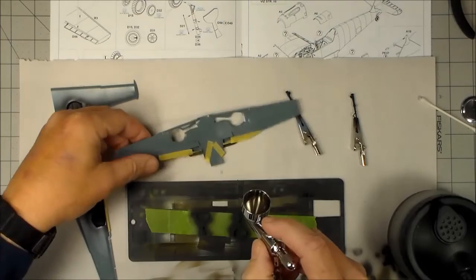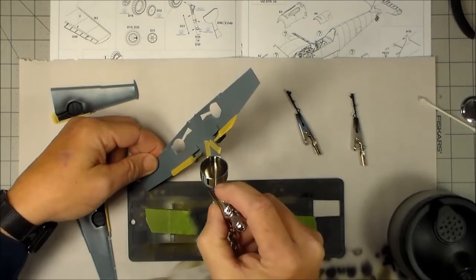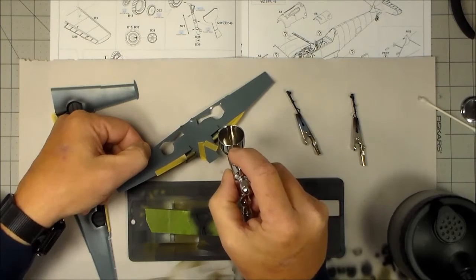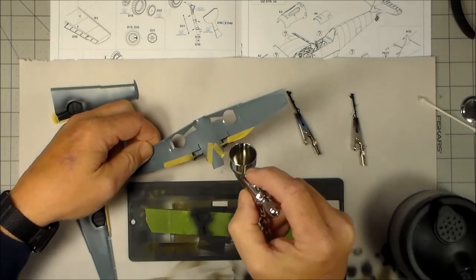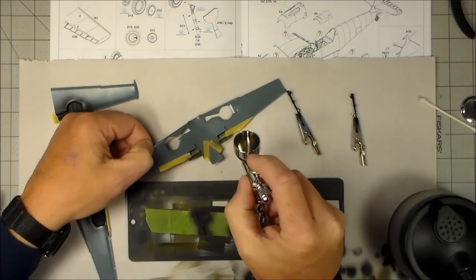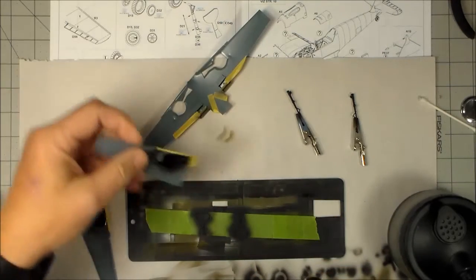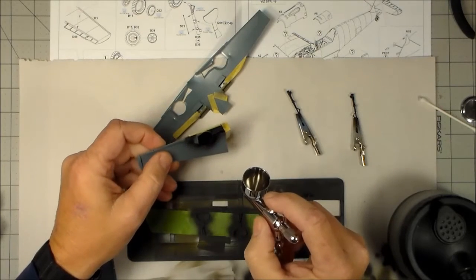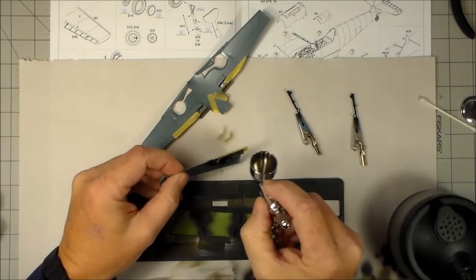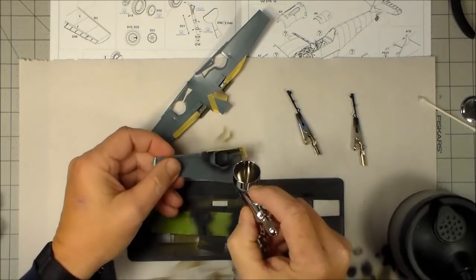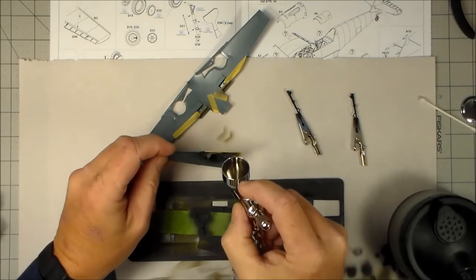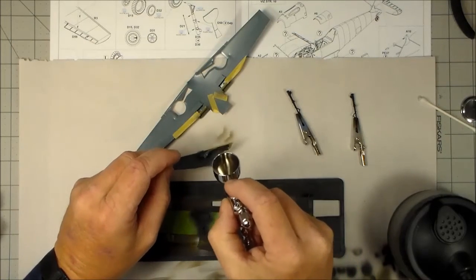Inside this portion here of the wing where the radiators are, inside the wheel wells, landing gear wells, whatever you want to call them.